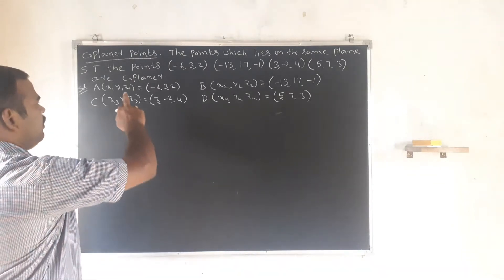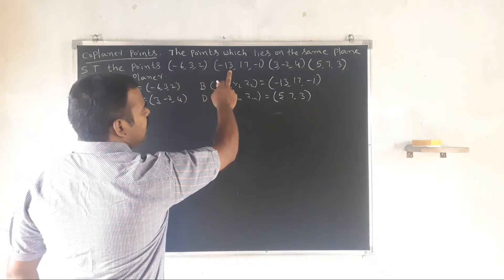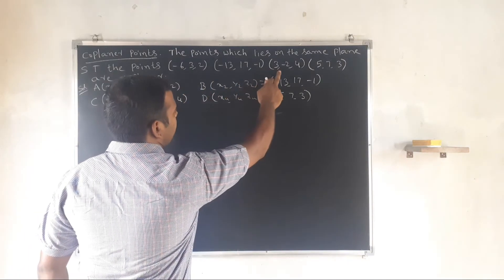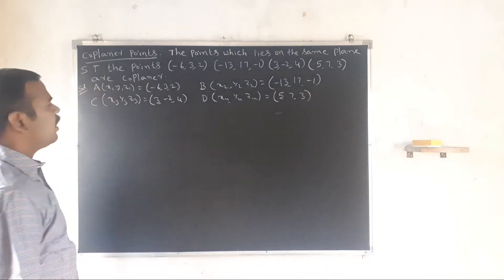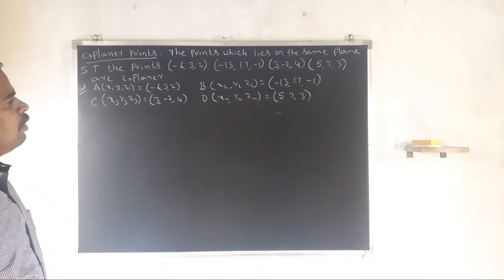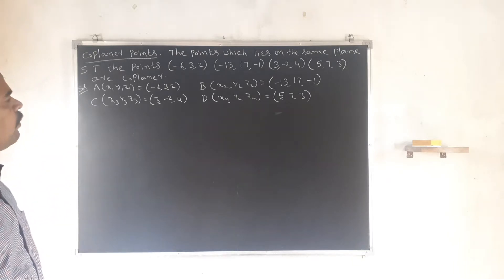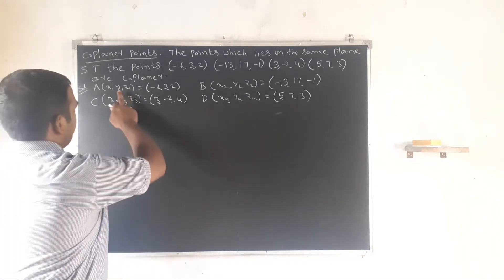Problem: Show that the points (-6, 3, 2), (-13, 17, -1), (3, -2, 4), and (5, 7, 3) are coplanar. Four points lying on the same plane are coplanar.